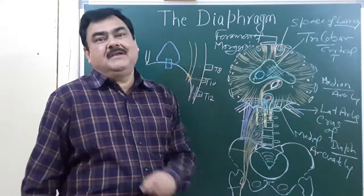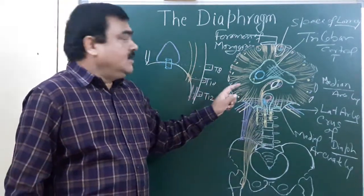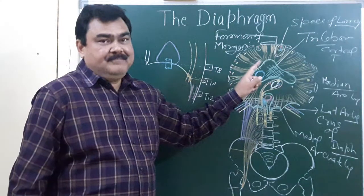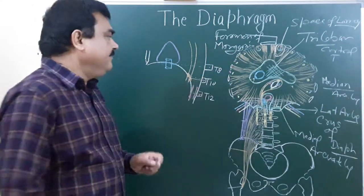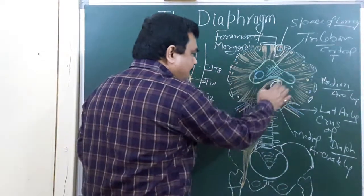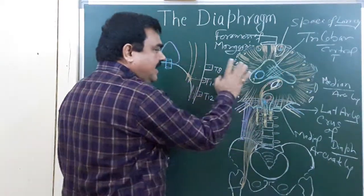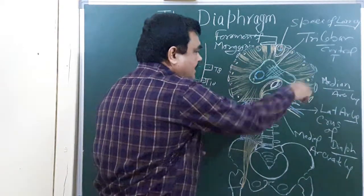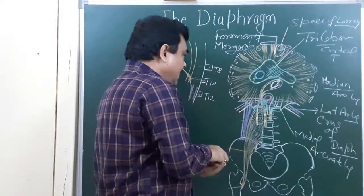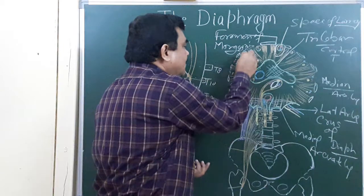Right and left frenic nerves give motor supply to this diaphragm. And sensory supply of the diaphragm comes from: this central area is supplied by frenic nerve and this peripheral part is supplied by the nerves of the intercostal space.